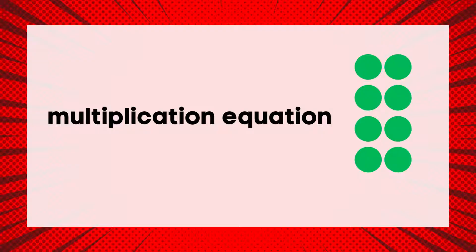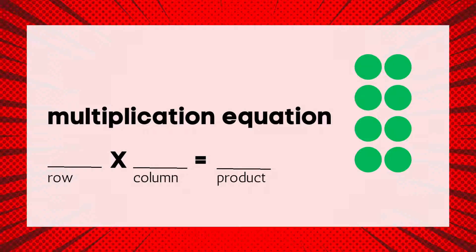Let's practice writing multiplication equations that match an array. This array has four rows and two columns. In the multiplication equation, the first factor is the number of rows, the second factor is the number of columns, and the product is the total, or how many in all.